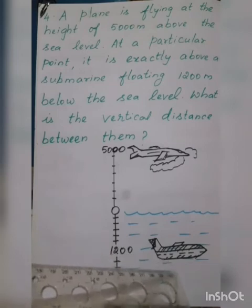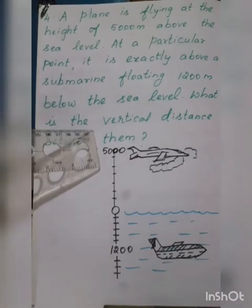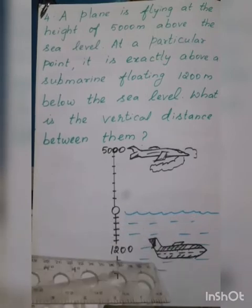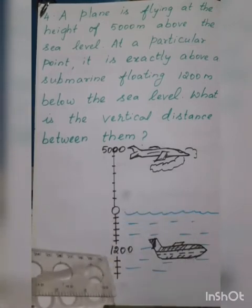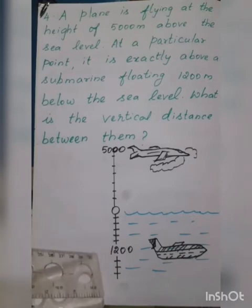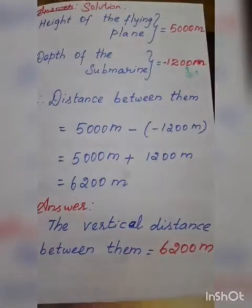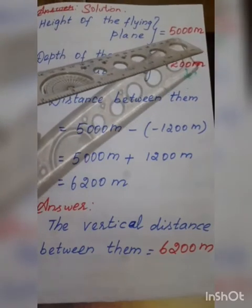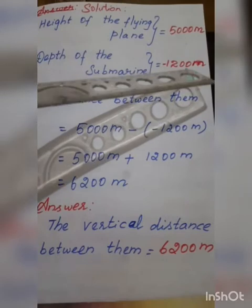The submarine is floating 1200 meters below the sea level. Above the sea level is increased, so the plane is at positive 5000 meters. Depth means below the sea level, which is a decreasing level, so the depth of the submarine is minus 1200 meters. We write positive 5000 meters for the plane and minus 1200 meters for the submarine.